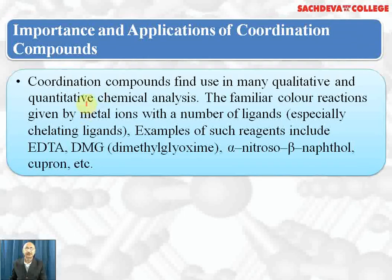Coordination compounds find use in many qualitative and quantitative chemical analyses. Familiar color reactions are given by metal ions with a number of ligands, especially chelating agents — for example, EDTA (ethylene diamine tetra-acetate), DMG (dimethylglyoxime), which gives a scarlet red precipitate with nickel ions, and alpha-nitroso-beta-naphthol. These ligands form colored complexes with metal ions by which they can be identified.